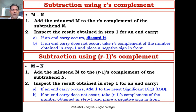The notation is M and N. We have two numbers: M, the minuend, and N, the subtrahend. We want to perform M minus N. Using R's complement, the first step is to add the minuend M to the R's complement of the subtrahend N. So we perform M plus R's complement of N. This is the first step.